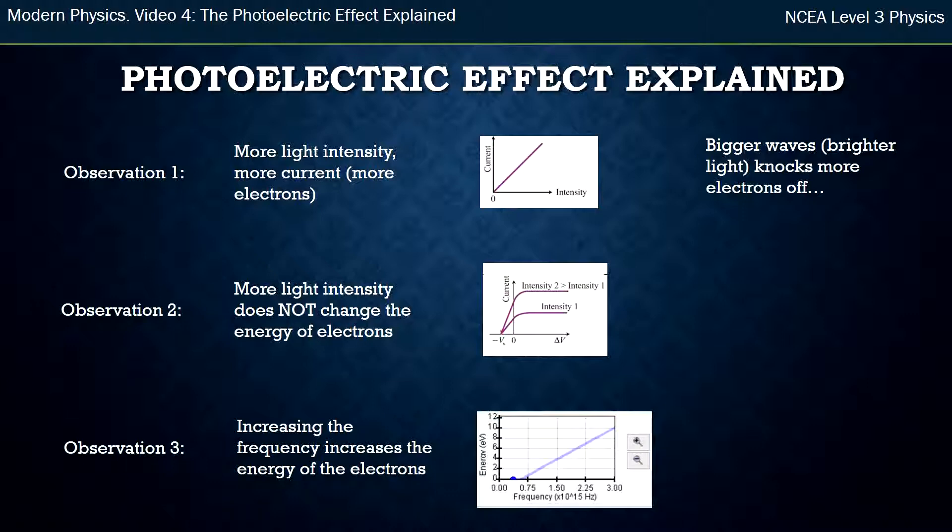The second observation however was that if we change the intensity, the brightness of the light, it didn't change the energy of those electrons that came off. Sure more of them came off but they weren't coming off any faster. And so what we found was that with a wave model the best we could say was that we thought bigger waves would give the electrons more energy, so brighter light, but it didn't. So that was not explainable using a wave model of light.